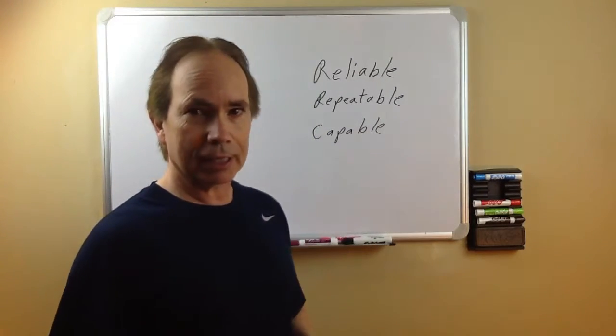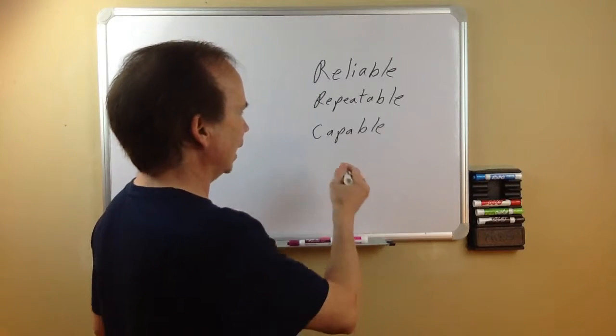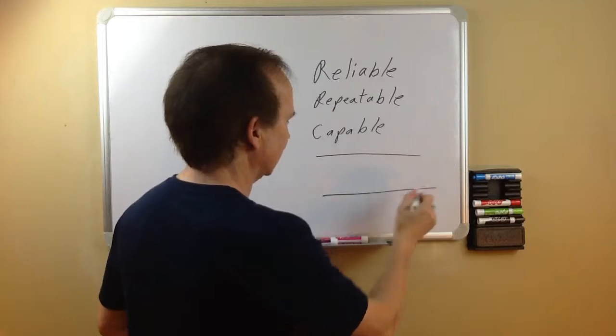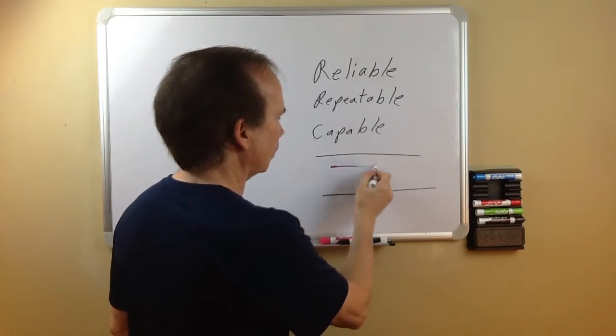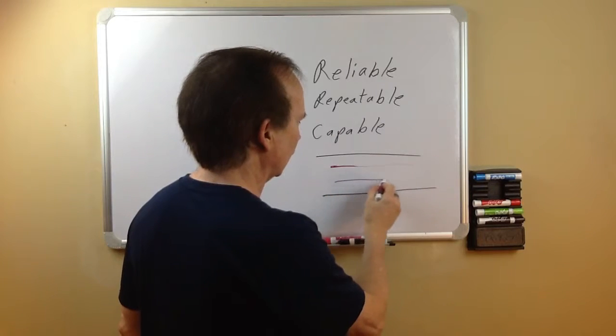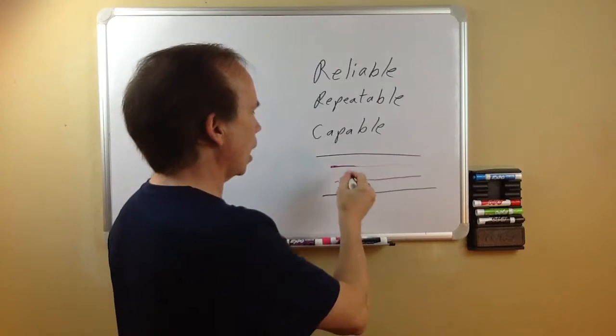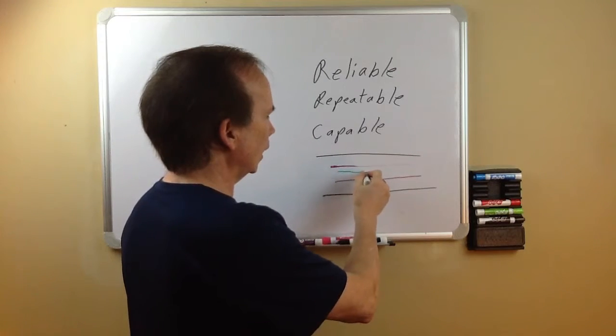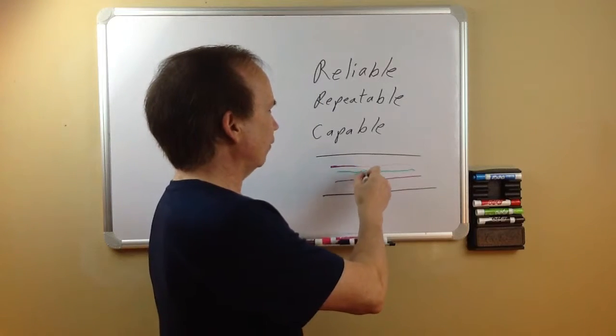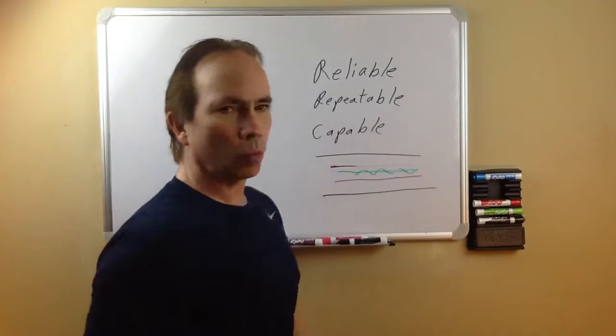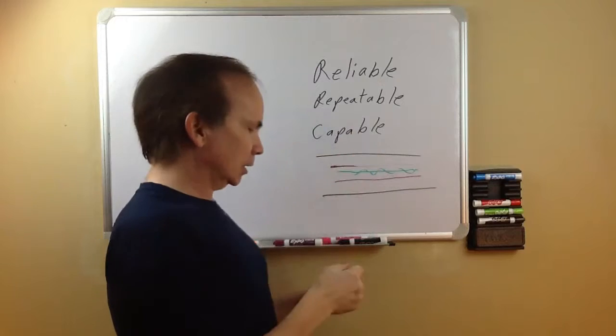Let's look at capable first. For a process to be capable, let's say we have our process measurements here, and in this we have our upper limit and our lower limit. What we want whenever we're measuring any of the products or looking at variation, we want everything right in the center. Then we have a very robust process, and even if we have variation, we know we're well within tolerances, and so we can meet customer expectations. That's what it means to be capable.